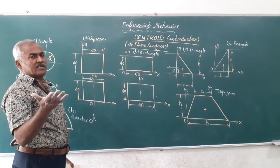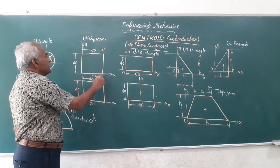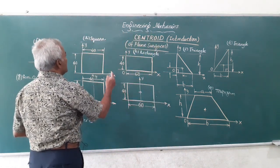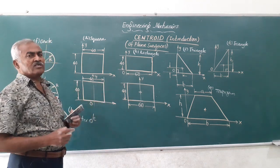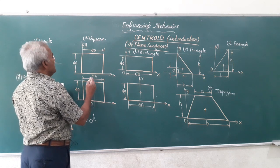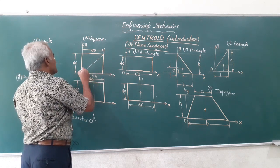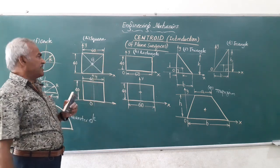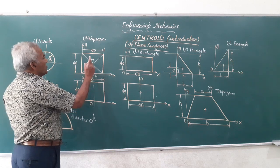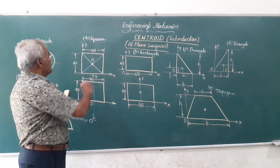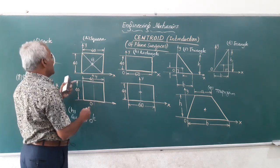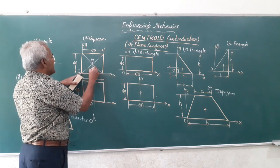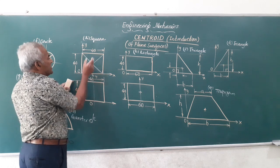Let me start with the square. I have a thin square lamina with dimensions of 40 millimeters each. For figures like square and rectangle, it is very easy to locate the centroid. Join the diagonals — they meet at a common point which I represent as G, and that is the centroid. If I want to state at what distance G is from the axes, I take this corner as the reference or origin. G is at a distance of half of 40, that is 20 mm.